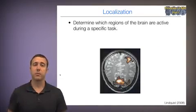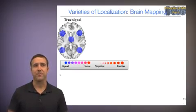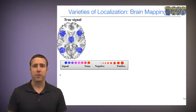There are three main goals of fMRI data analysis. The first one is localization, the process of determining which specific regions of the brain are active during a specific task or in relation to a specific psychological event or behavior. And there are varieties of localization, and all of these together constitute what we'll call the brain mapping approach.